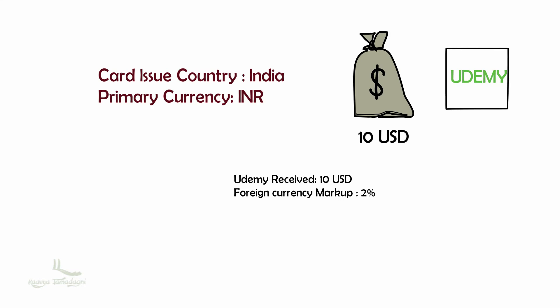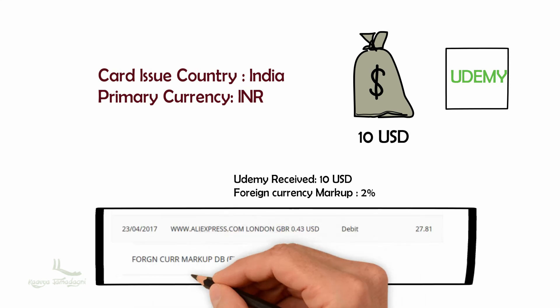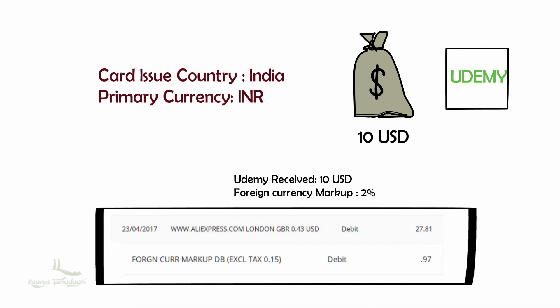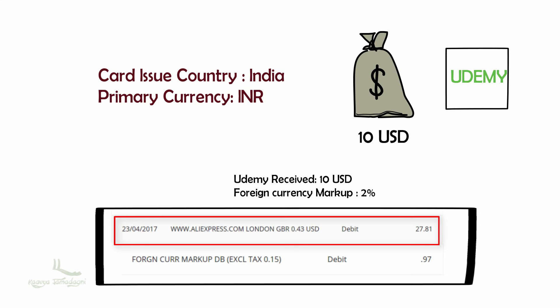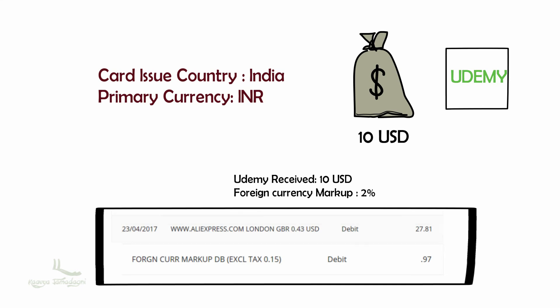Let me show you a screenshot from my credit card to explain bank charges. Here I paid 0.43 USD to AliExpress.com, and along with that amount, I was charged additional foreign currency charges on top of the 0.43 USD. I hope you now understand what bank charges are.